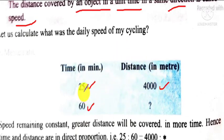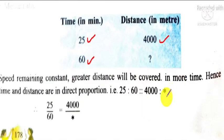We can write it in a mathematical form like this, and here as the time increases, distance also increases. So we can write it as 25 is to 60 equals to 4000 by x, where x is the distance covered by the cycle in the stipulated period of time, 60 minutes. Here it is denoted by star or asterisk. So by cross multiplication, we can easily find out the value.